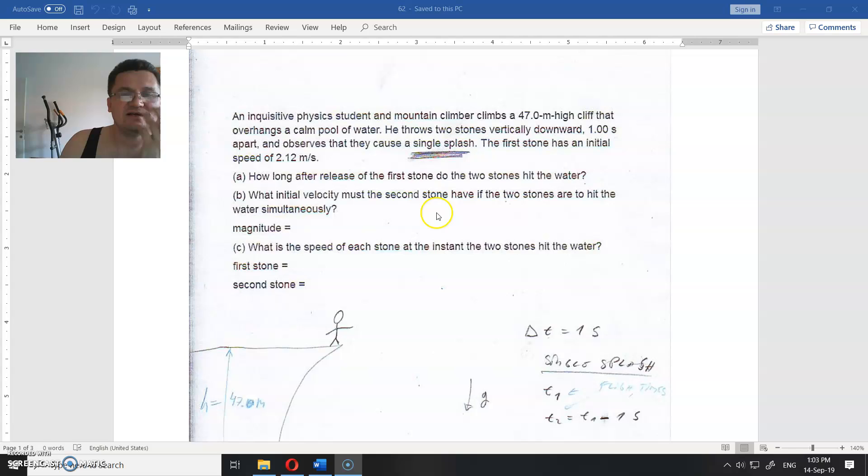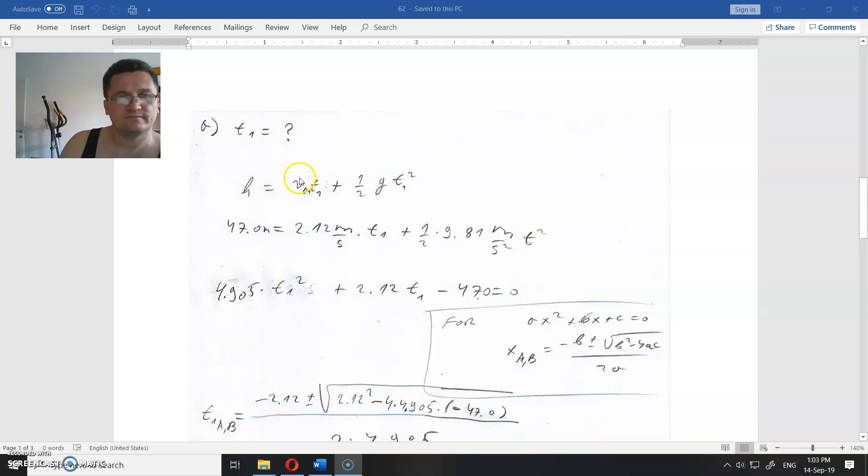Second question is, what is the initial velocity of the second stone? For what time? For that same time, but not exactly - for one second less.